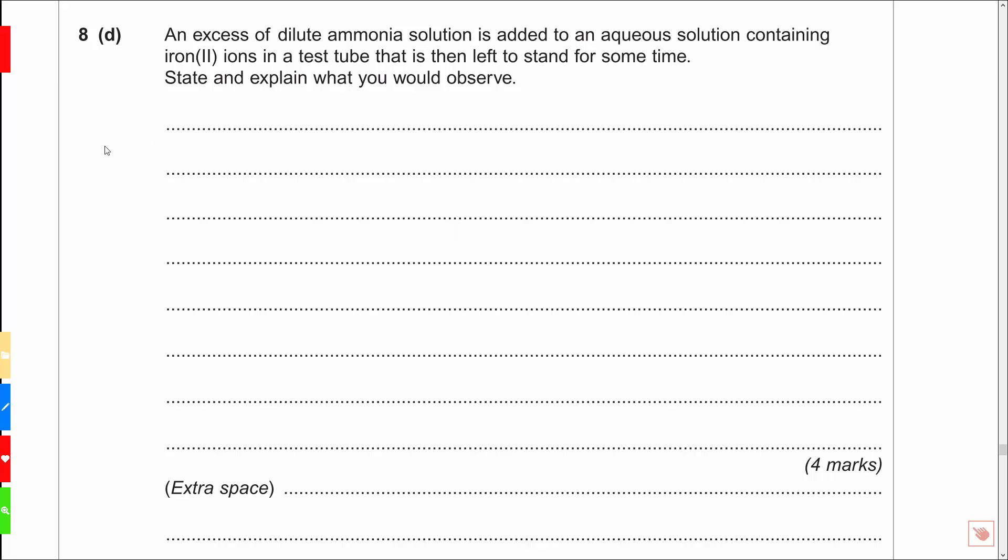This is from about 2014 I think, old specification as well. An excess of dilute ammonia solution is added to an aqueous solution containing iron 2 ions in a test tube that is then left to stand for some time. State and explain what you would observe. We'll stick to some equations down here because I do love a good equation.